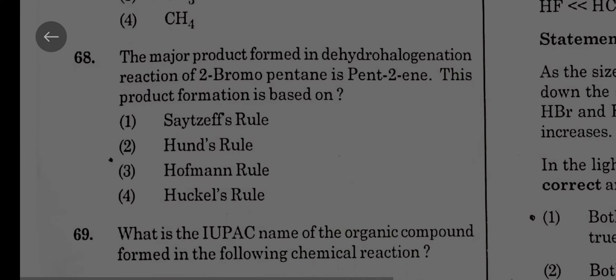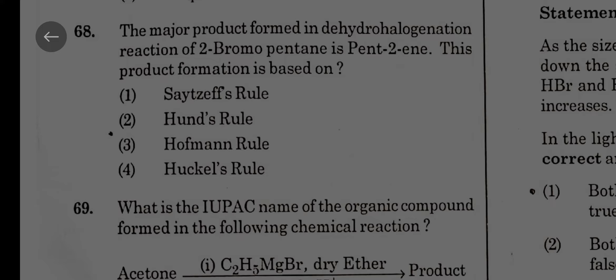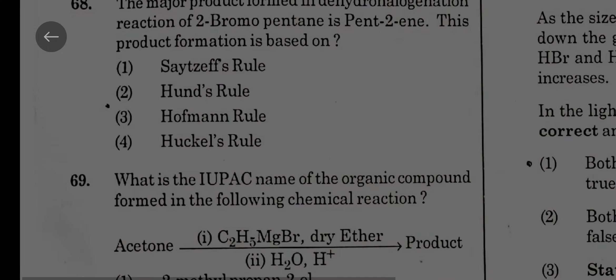The major product formed in dehydrohalogenation reaction of 2-bromopentane is pentene, not pent-1-ene. Pent-2-ene is Saytzeff's rule. If it is pent-1-ene that is Hofmann's. So here the correct key is one.